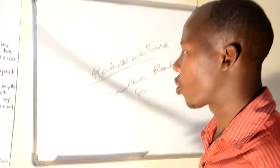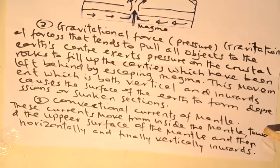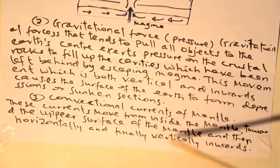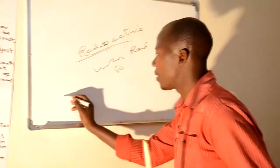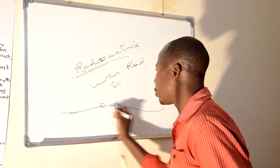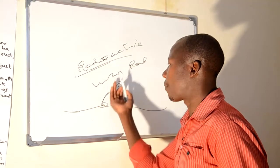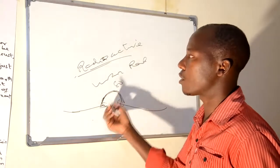Dear students, another factor is the convection currents of the mantle. These currents move from inside the mantle towards the upper surface of the mantle, then horizontal and finally vertical inwards. This is where material is just converted and moved within the earth's crust. Material moving from one direction to another — wherever it converges, it can cause the formation of landforms, either uplifted or downlifting, but mostly uplifting, causing changes of landform.